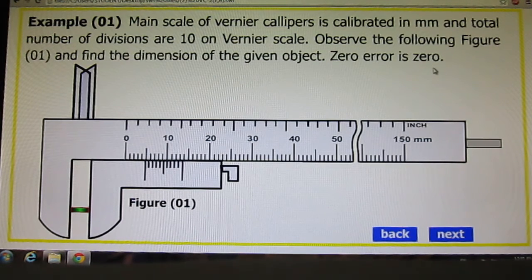Zero error is 0. Here is the object, here is vernier scale, here is main scale, and we have to find out length of this object.